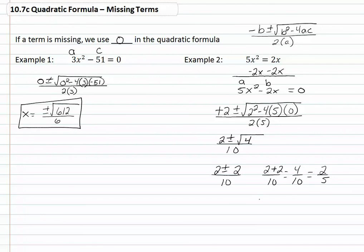We have two minus two over ten, which gives us zero over ten, which simplifies simply to zero. So we have x is equal to zero and two fifths.